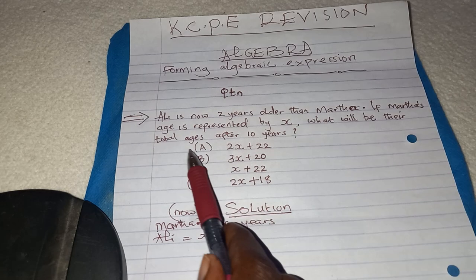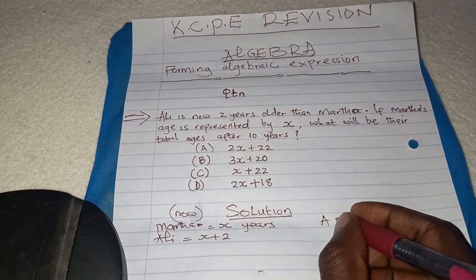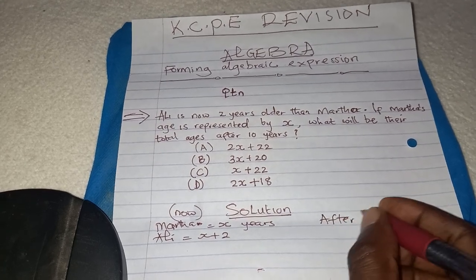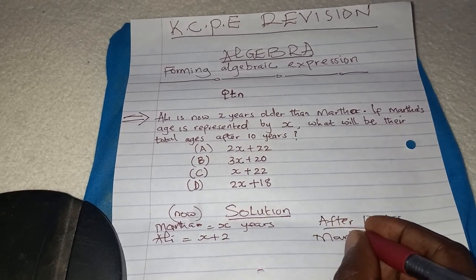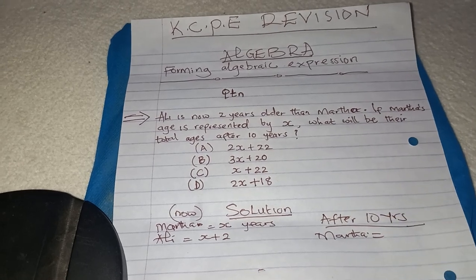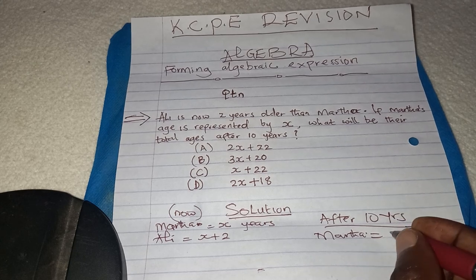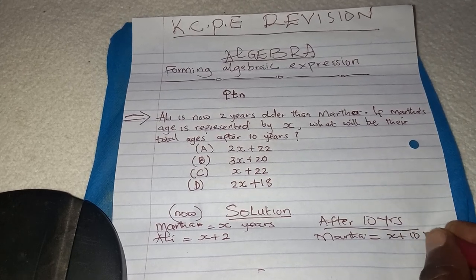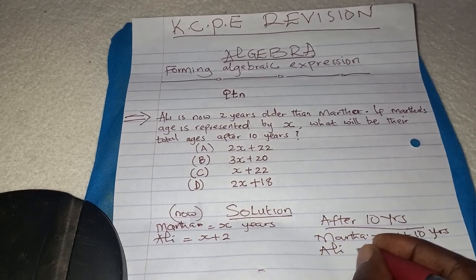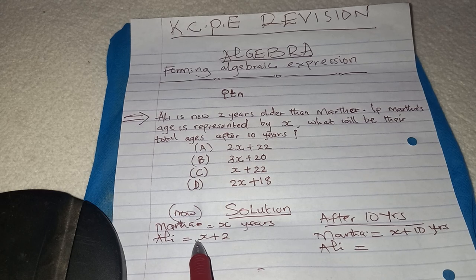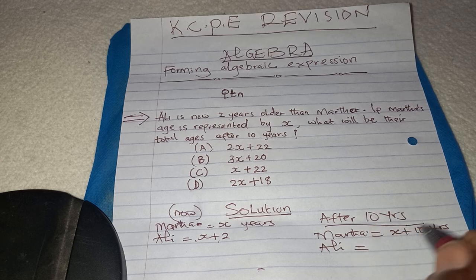You are told: what will be their total ages after 10 years? So after 10 years, mother will be X plus 10 years. What about Ali? Ali will be X plus 2 plus 10, so Ali will be X plus 12.